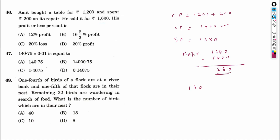Profit is ₹280 on a cost price of ₹1400. Profit percent x = (280 × 100) / 1400. Cancelling zeros: 280/14 = 20. So the profit percentage is 20%.